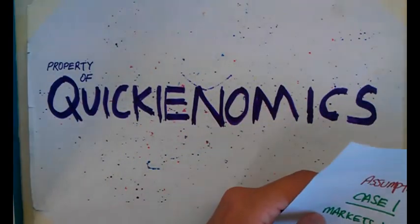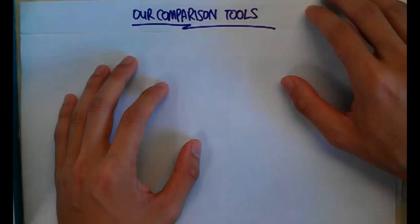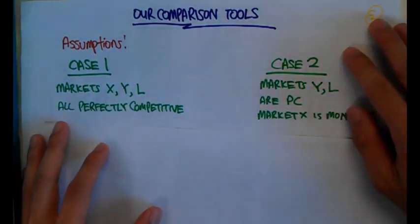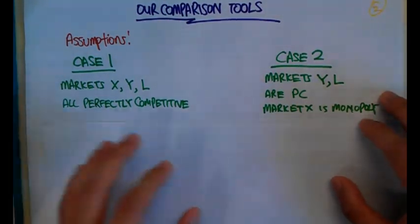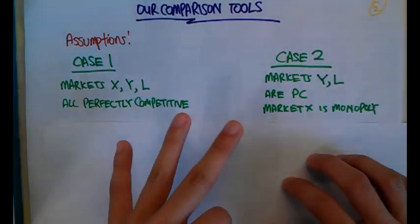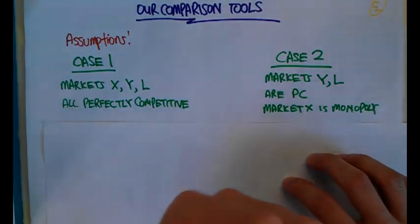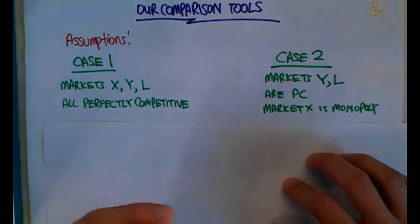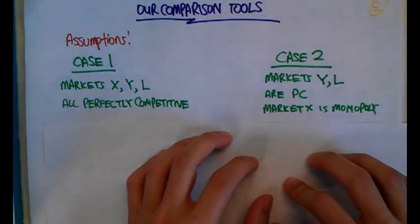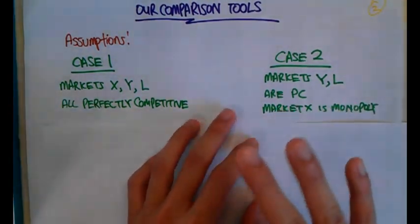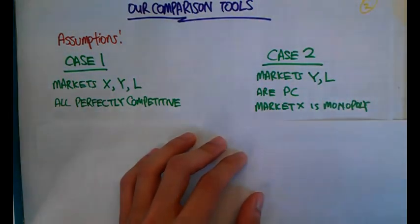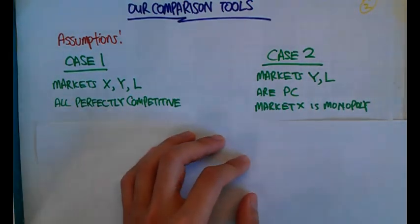Let's start by establishing some comparison tools. We have two cases. Case one: there are three markets — market for good X, market for good Y, and the market for labor — and all are perfectly competitive, meaning no above-normal profits. Case two: market X is a monopolized market, while Y and labor remain perfectly competitive.